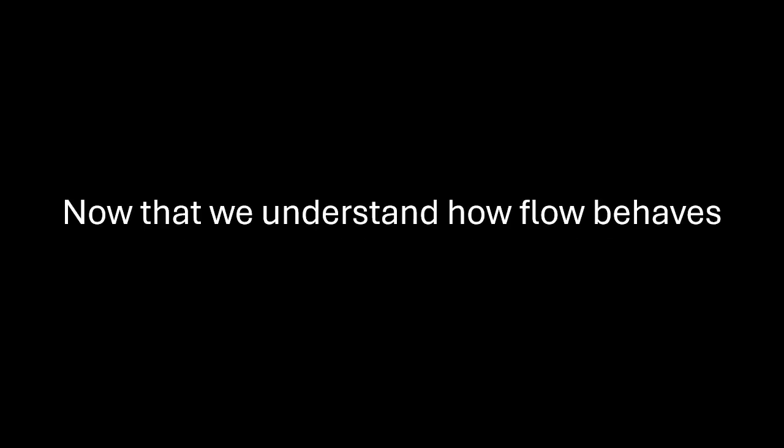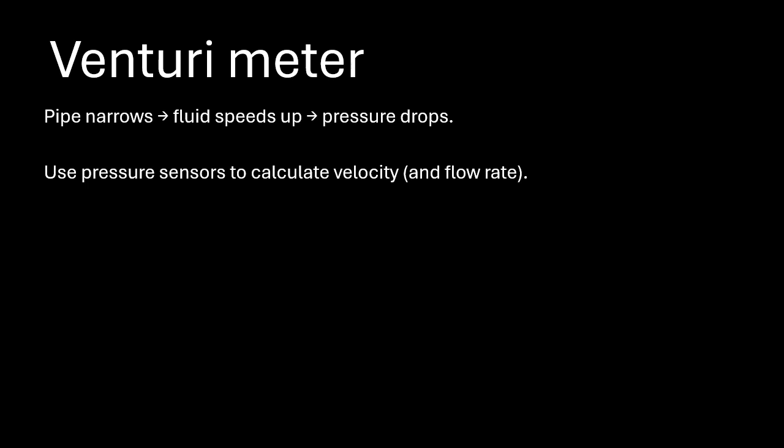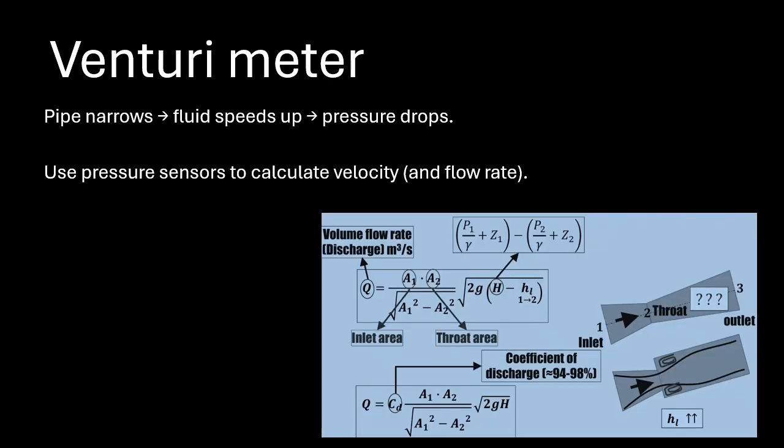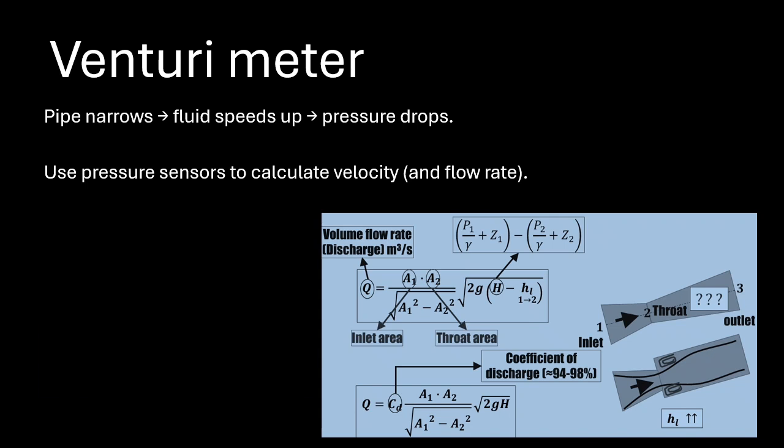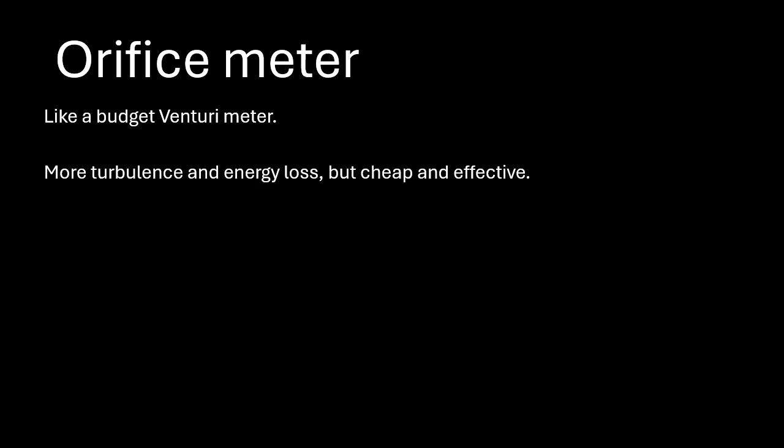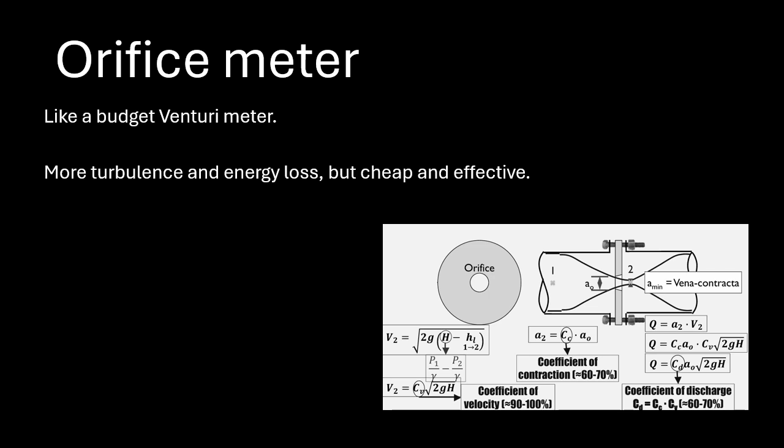Now, let's talk about flow measurement tools. Now we understand how flow behaves. So let's measure it. We have a venturi meter, which by narrow flow speed up pressure drop. Use pressure sensors to calculate velocity. And this is the formula of how we're using the venturi meter. And this is a venturi meter in real life. And second one is the orifice meter. Like a budget venturi meter. More turbulence and energy loss. But cheap and effective. And this is the formula. And its shape. Now let's talk about the pitot tube, which is used on airplanes to measure airspeed. And one hole faces the air flow and gets the total pressure. Another hole reads the static pressure. As you see here.